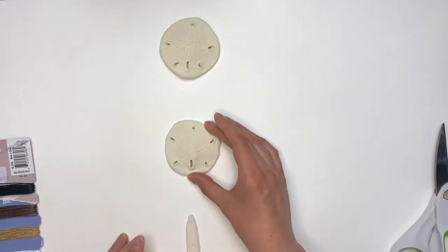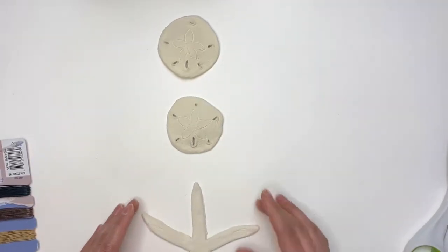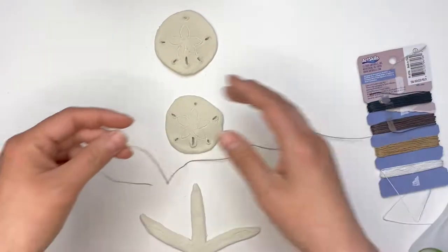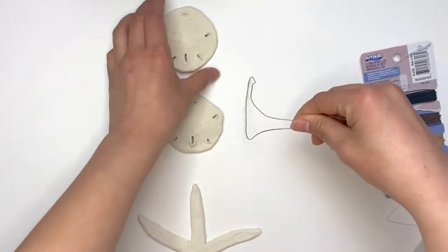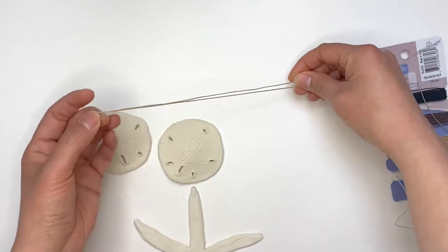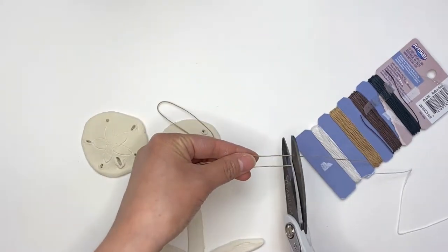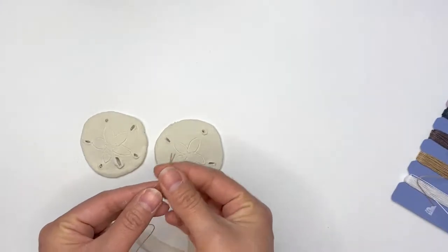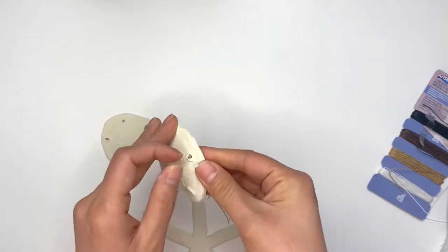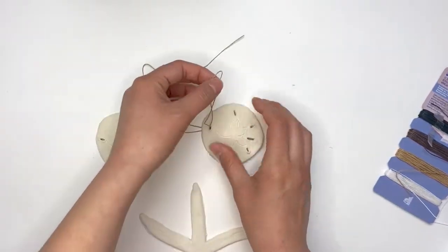Once all of your pieces are nice and dry, it's time to put your wall hanging together. So I decided to arrange my wall hanging with two sand dollars on top and then the starfish at the bottom. So I used some natural craft cord from the Dollar Tree, so I started by attaching a piece of cord to the top where I'm going to hang it from.